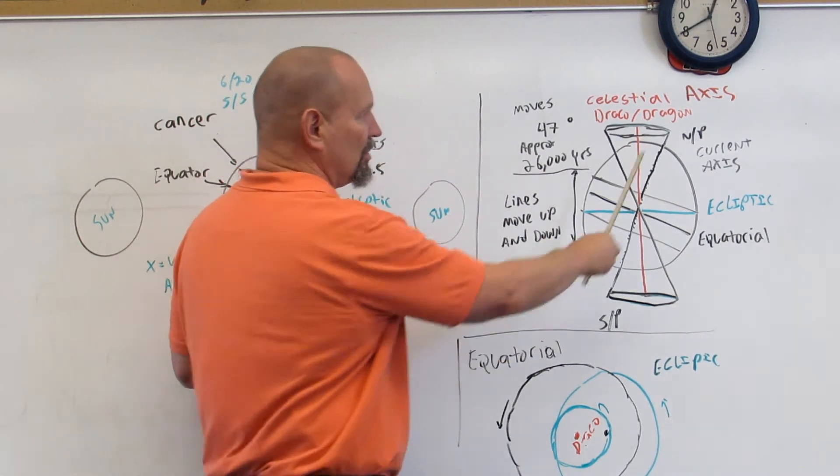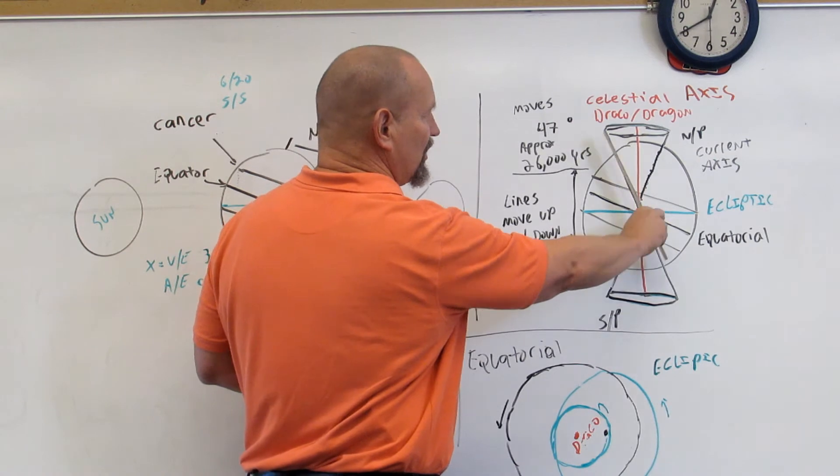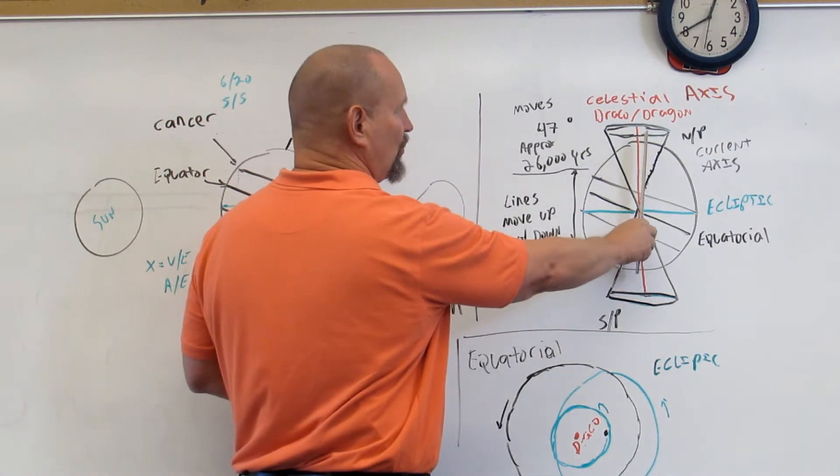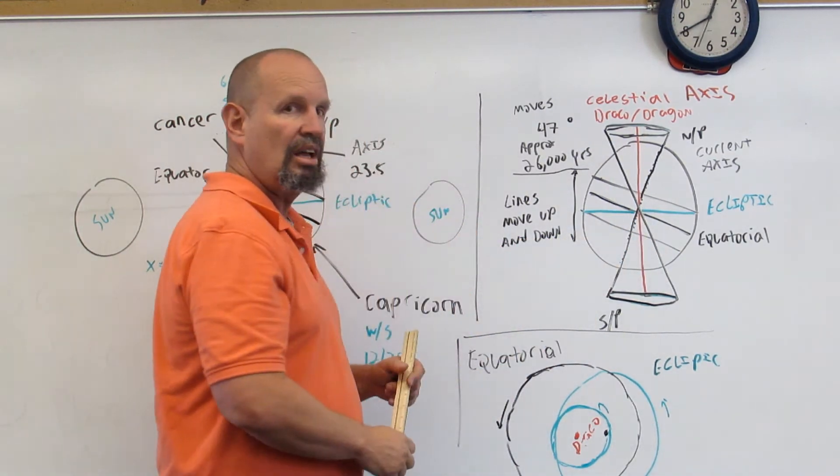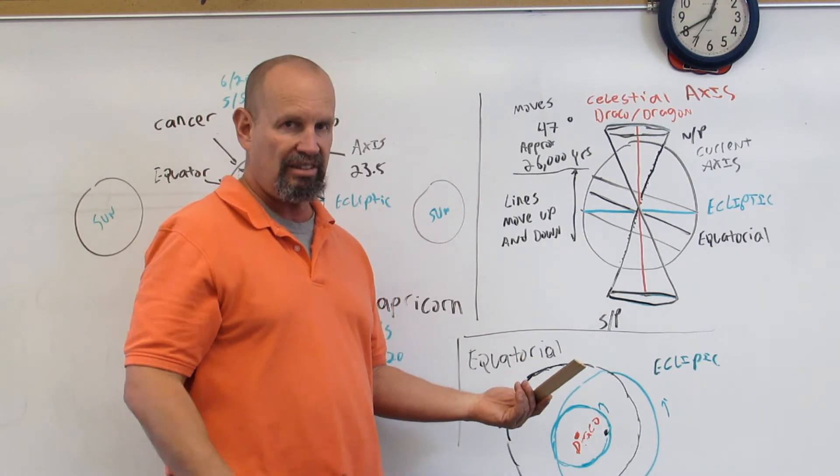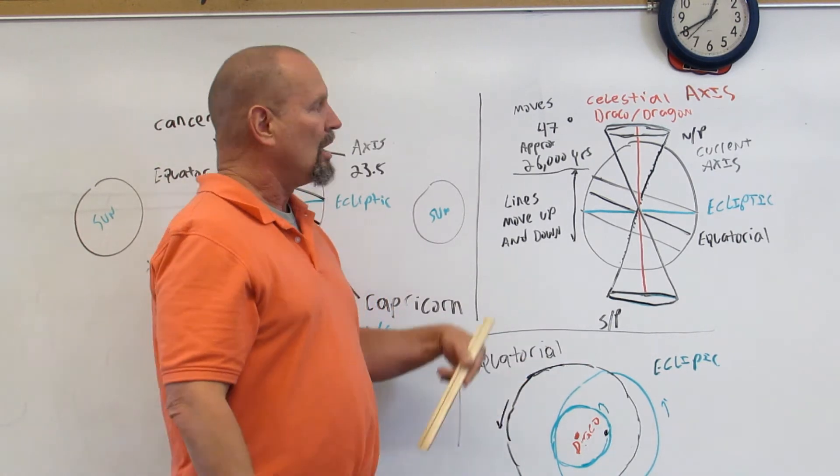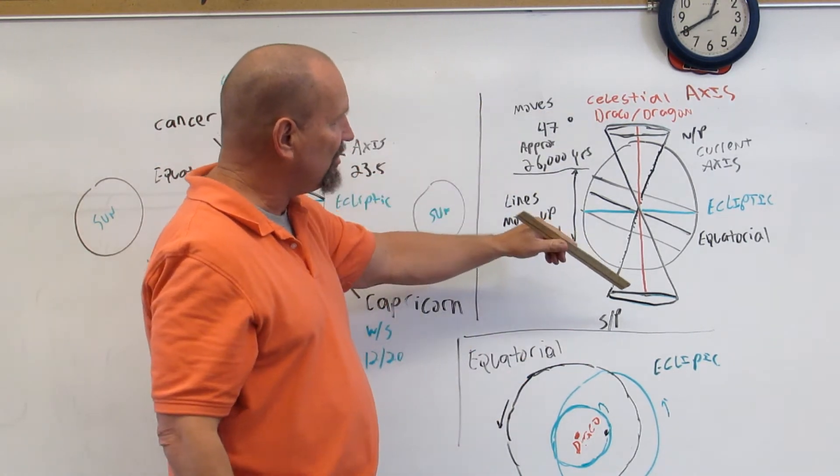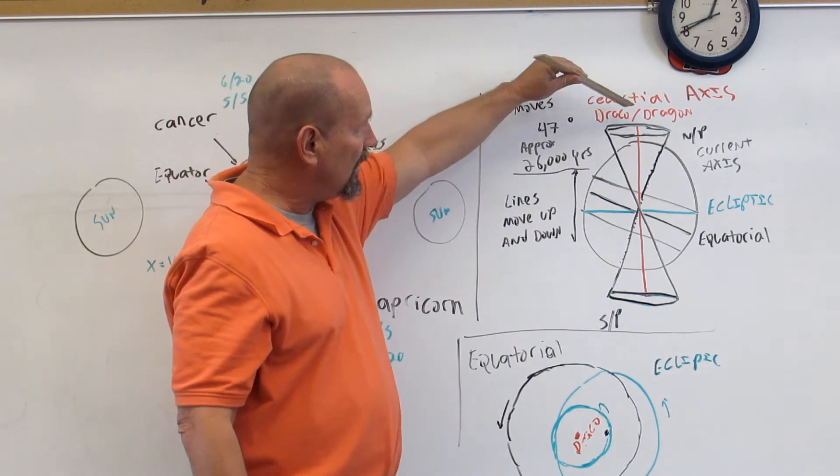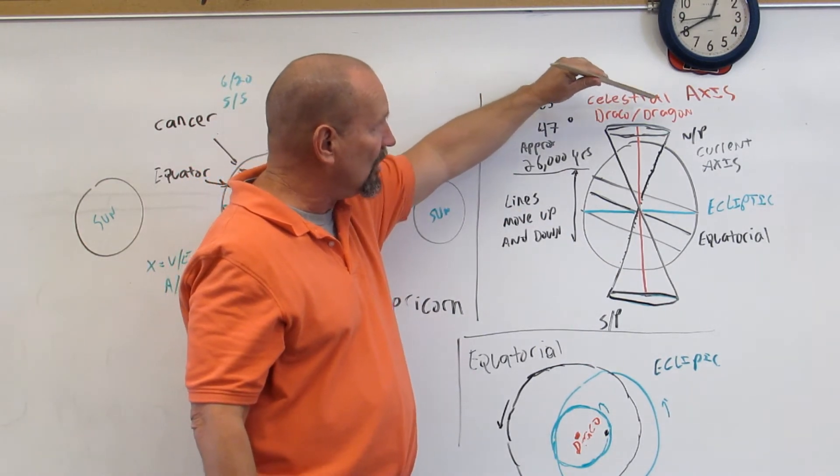But in addition to this angle, you're going to see this and this. This red line represents the celestial axis. This is called the celestial axis, and it is marked by a constellation known as Draco or the Dragon.